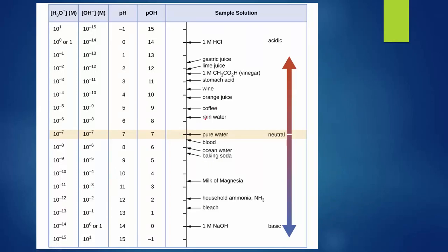This chart shows the pH and pOH of several solutions from acids to bases. Starting with 1 molar hydrochloric acid: its pOH value is large, meaning a very small OH- concentration (10 to the negative 14). As we go down the scale, pH plus pOH always adds up to 14. As solutions become more acidic, pH goes down; as they become more basic, pH goes up, because a high pH value corresponds to a very small hydronium concentration.